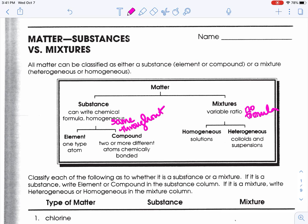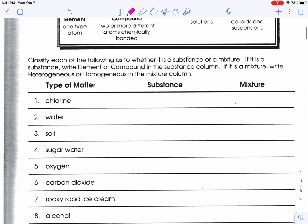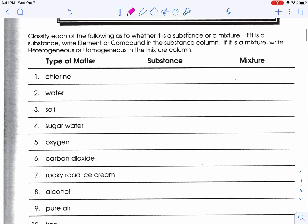Classify each of the following as to whether it is a substance or a mixture. If it's a substance, write element or compound. If it's a mixture, write heterogeneous or homogeneous.